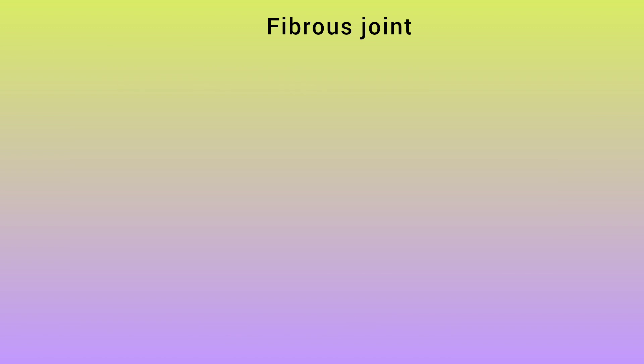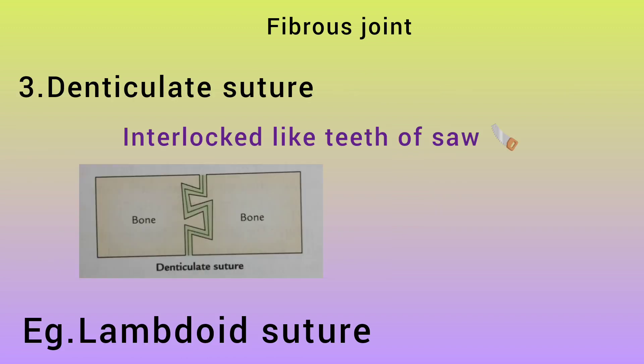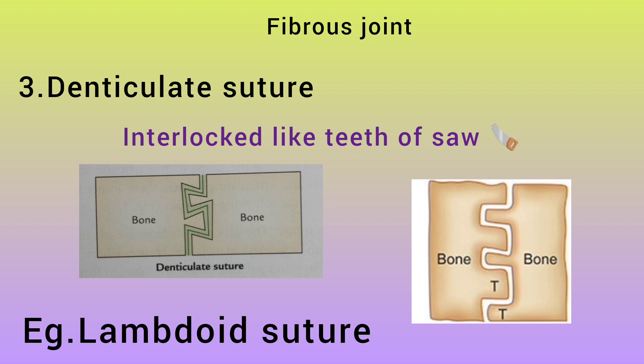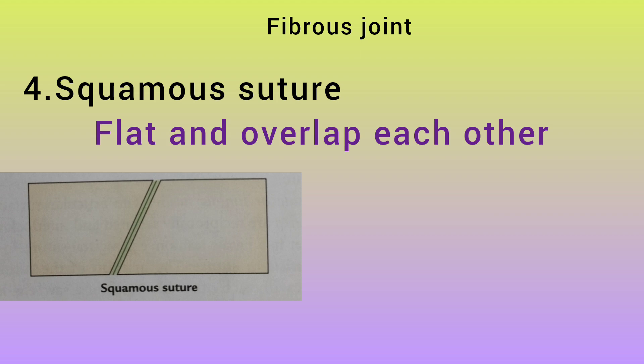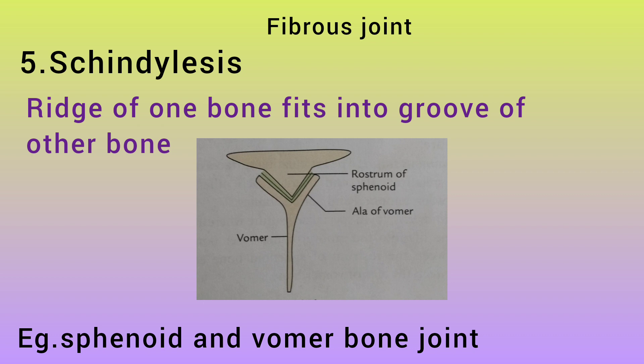The third type is serrate suture — this is reciprocally serrated and interlocked in a jigsaw fashion where both bones are attached. This is the sagittal suture of the skull. Next, denticulate suture — interlocked like teeth of a saw; for example, the lambdoid suture. Squamous suture — flat and overlapping, for example between the temporal and parietal bone. Last is schindylesis — a bone ridge and groove joint, for example the rostrum of sphenoid and ala of vomer.